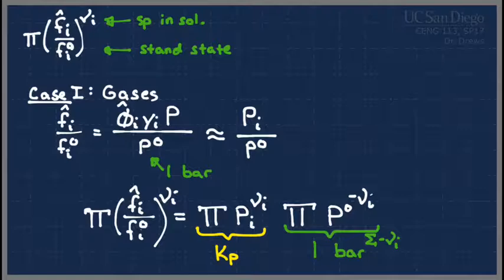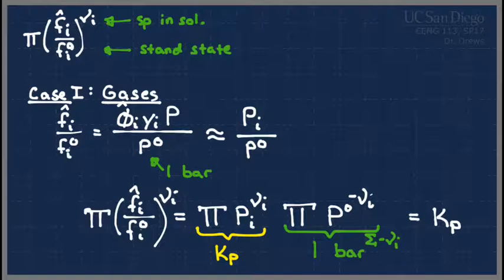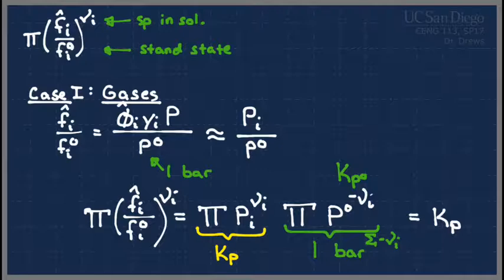That's as far as we take gases. You can work further on the fugacity coefficient φ if you want, but generally we don't — you can use the other page in kcalc if you desire. At the end of the day, what you're left with is π equal to K_p. The other term (K_p°) always has the numerical value of one, so we don't often carry it around. It's just not particularly relevant as long as you remember to use bar. For gases, the product of all those fugacities just looks like K_p — the product of all partial pressures raised to their stoichiometric coefficients.